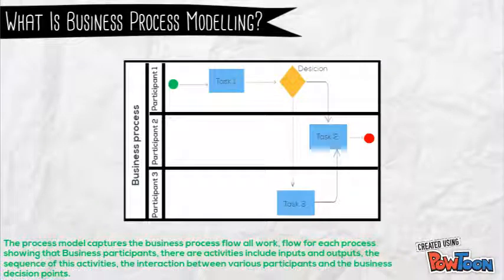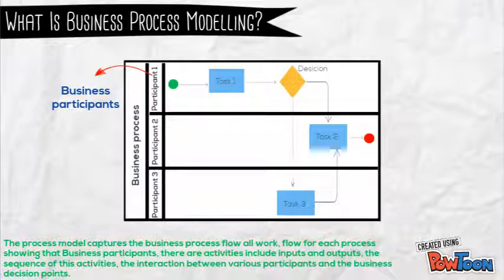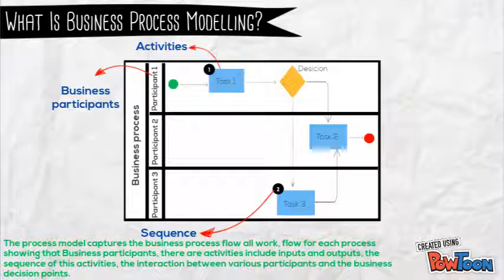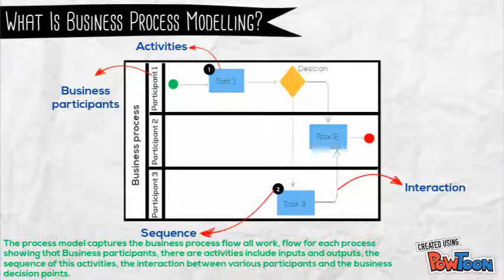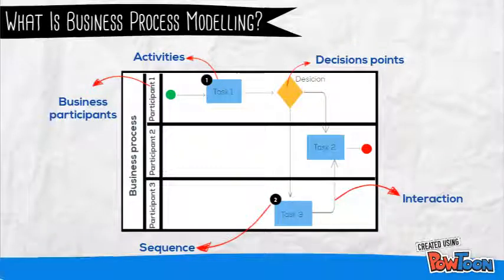The process model captures the business process flow or workflow for each process, showing their business participants, their activities including inputs and outputs, the sequence of these activities, the interactions between various participants, and the business decision points.